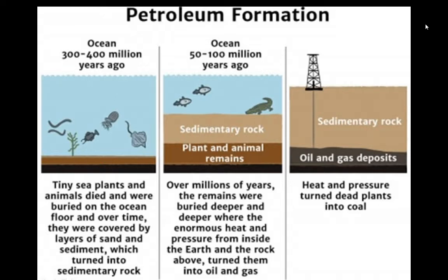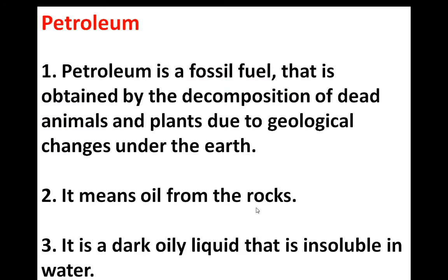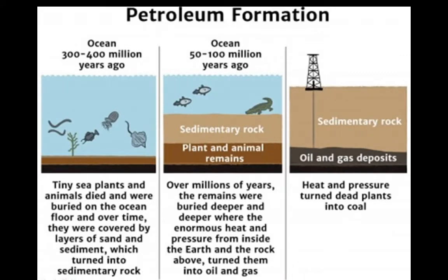Heat and pressure turn the dead plants into coal. Petroleum means oil from the rocks. The dead plants and animals form sedimentary rock because sand covers them. Then more remains are buried on top of that sedimentary rock, increasing its thickness. Heat and pressure apply on this sedimentary rock and turn the dead plants and animals into oil and gas, or into petroleum. So that is the story about petroleum formation, similar to how coal forms.